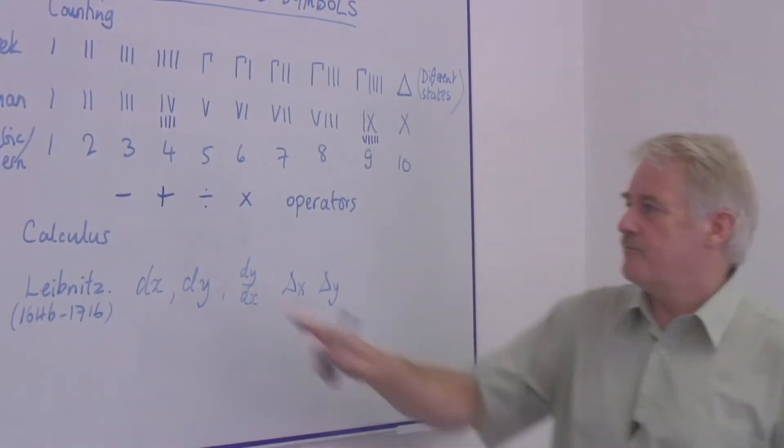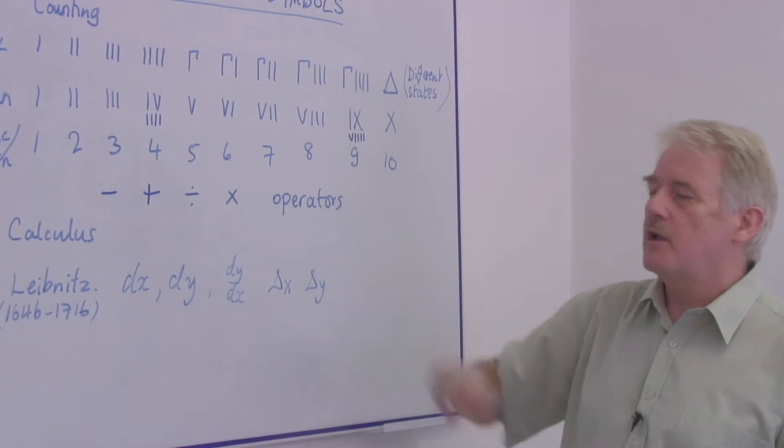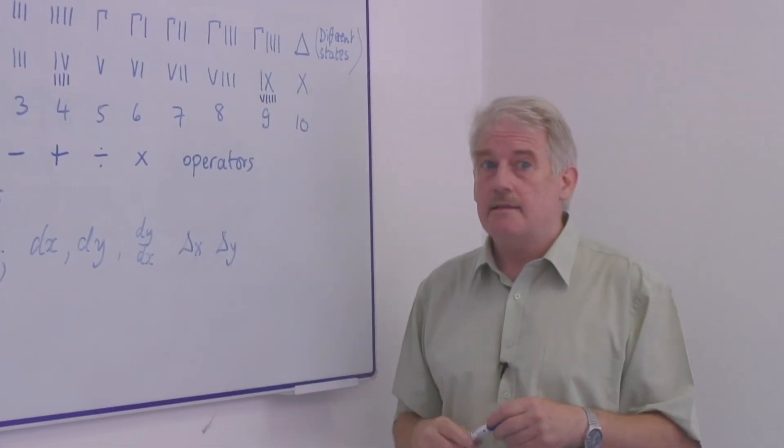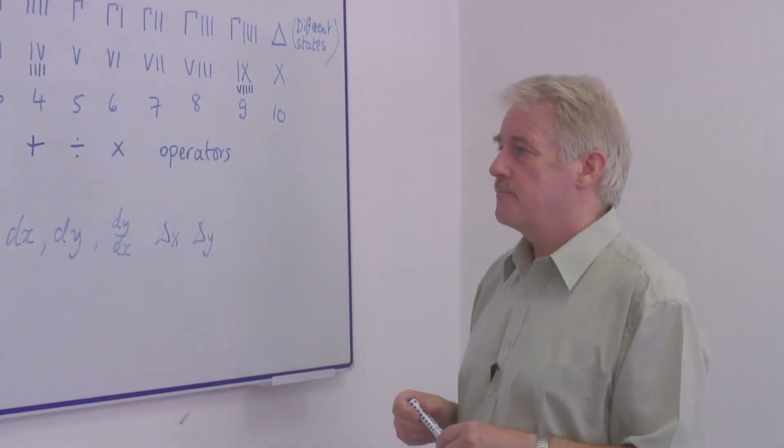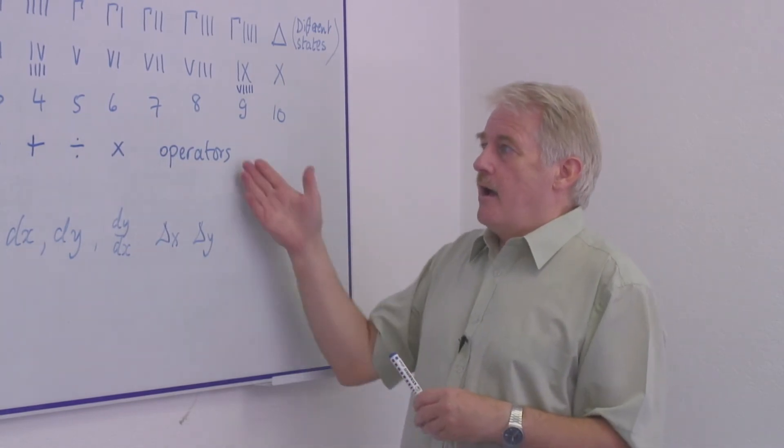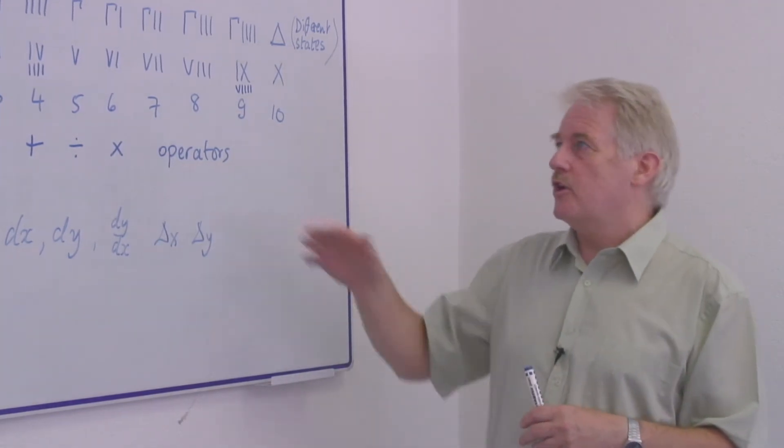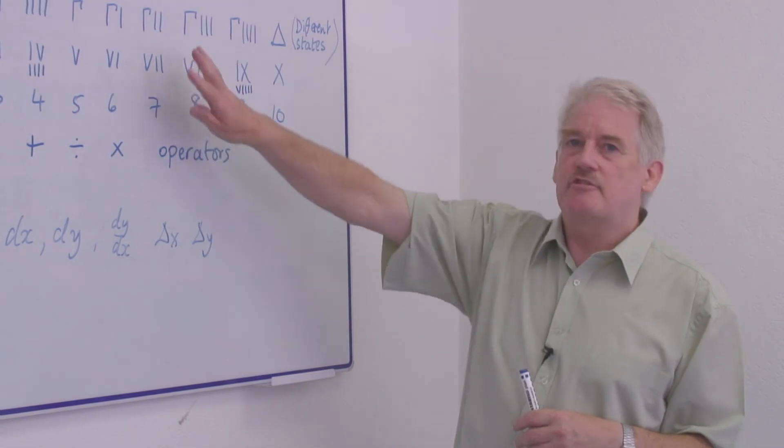We have minus, plus, divide and multiply. And these came quite late. These were not early developments. Once we have these we can operate on our counting numbers.